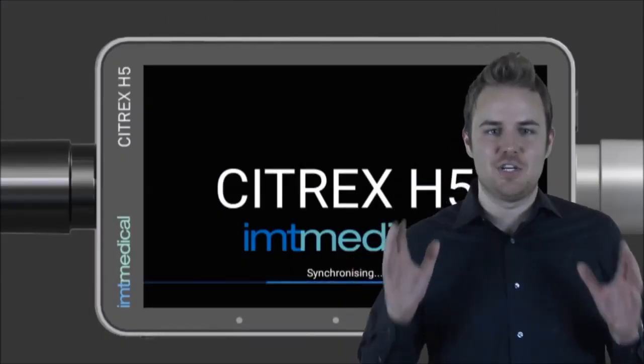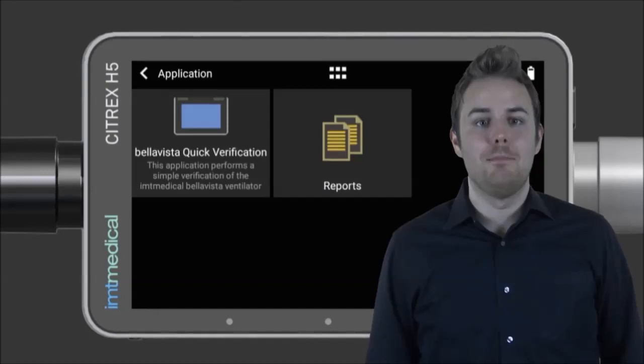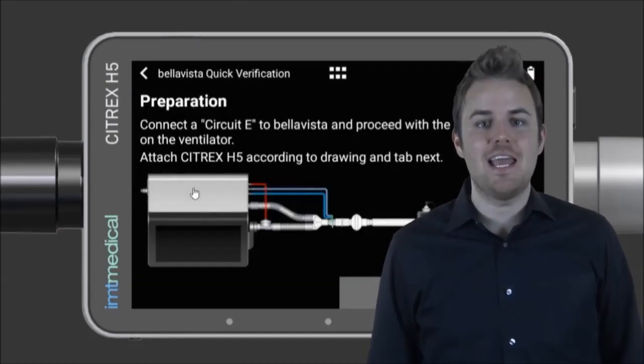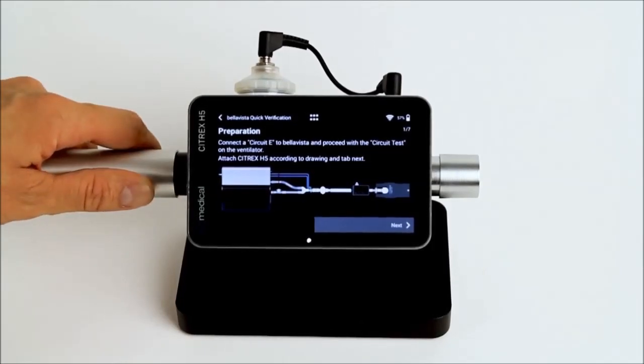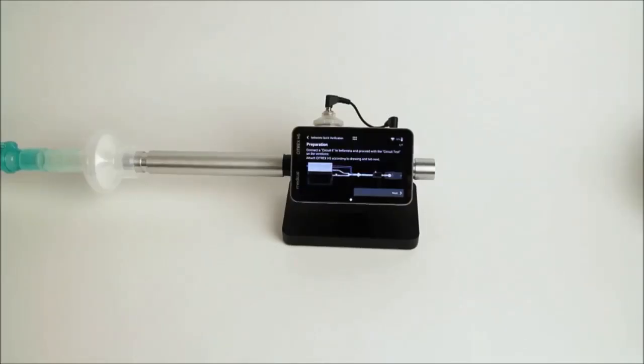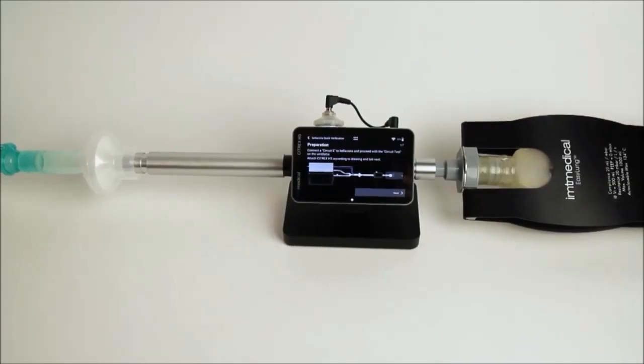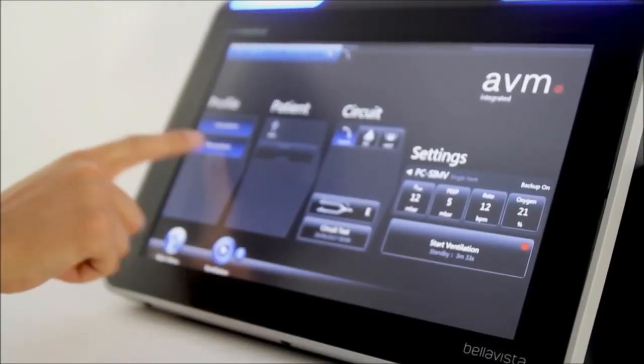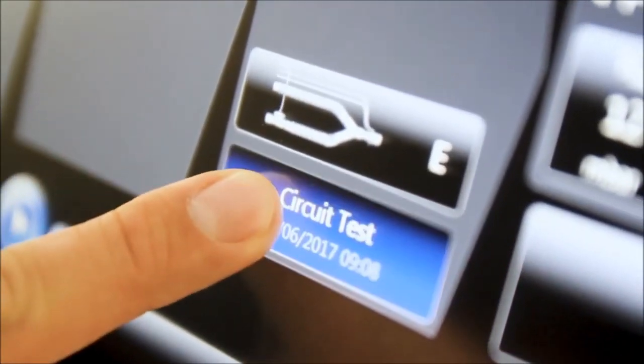So let's get started. Launch the app, BellaVista Quick Verification on Citrix H5. Then connect a BellaVista ventilator to the Citrix H5 gas flow analyzer according to the diagram. Ensure that a successful patient circuit test has been performed before.